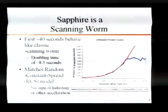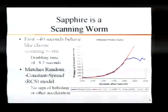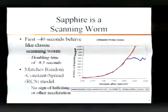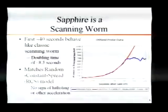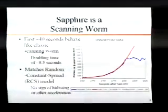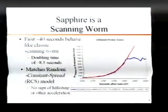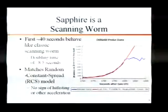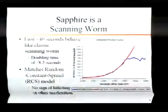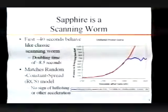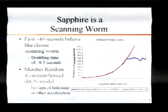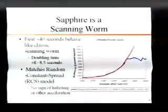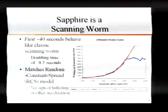For the first 40 seconds, SAFIRE looked like any other scanning worm — Code Red, etc. — just very, very fast. Scanning worms we've modeled in the past as a sigmoid logistic function, the nice S-curve. For the first 40 seconds, SAFIRE actually matched this with a doubling time of about every eight and a half seconds. Since we can see the early moments across all our data sets with sufficient resolution, there was no sign of a hit list or other acceleration techniques employed. Just a fast scanning worm.